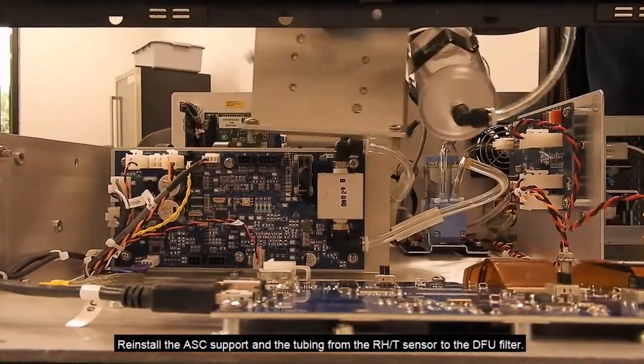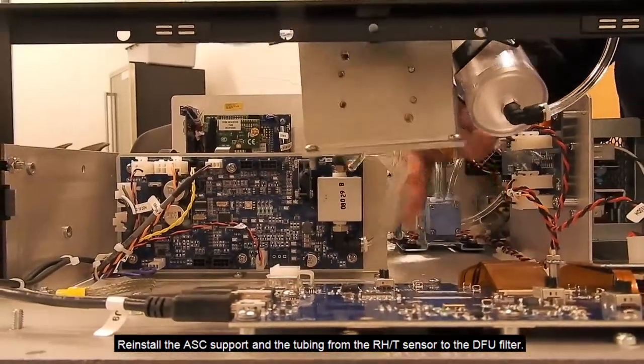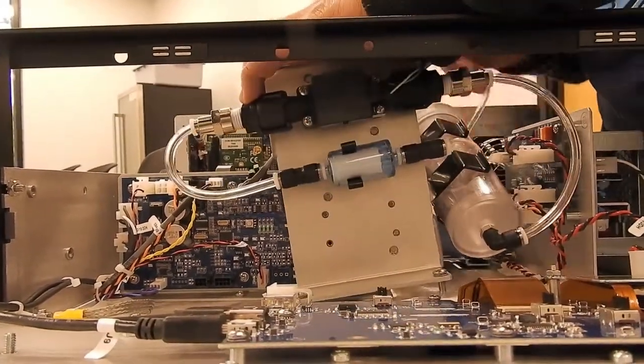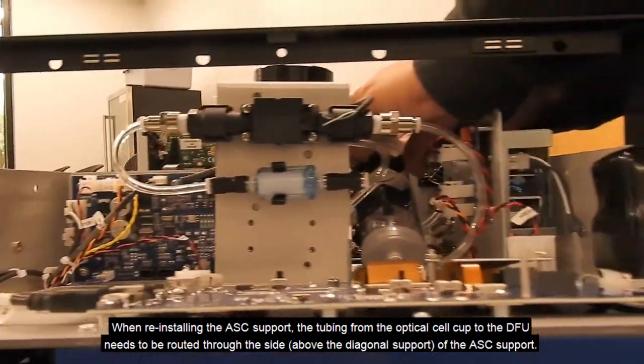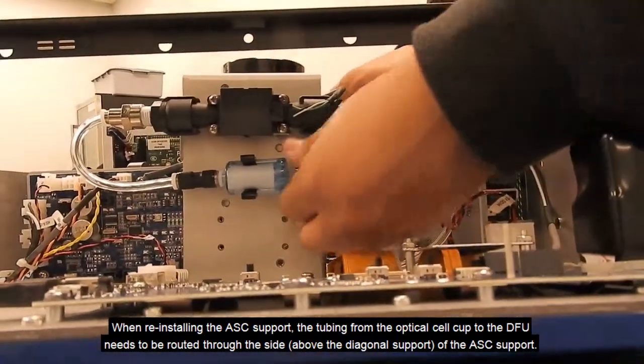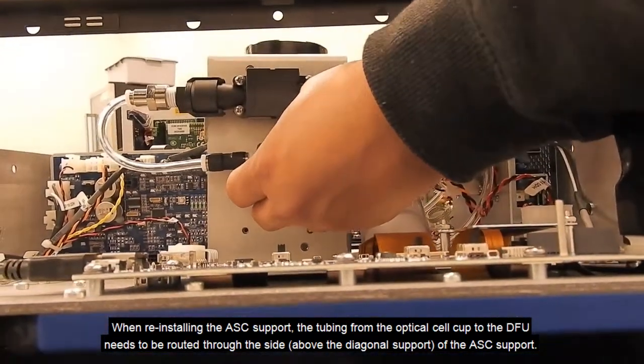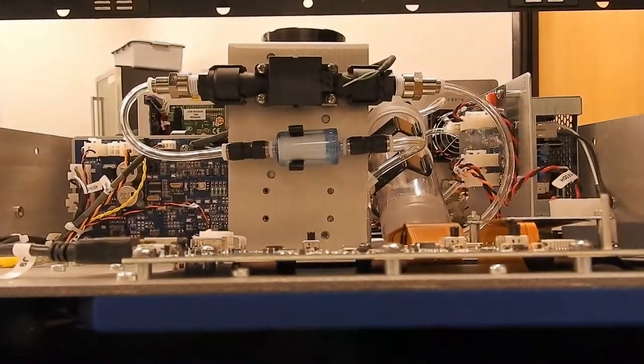Reinstall the ASC support and the tubing from the RHT sensor to the DFU filter. When reinstalling the ASC support, the tubing from the optical cell cup to the DFU needs to be routed through the side, above the diagonal support of the ASC support.